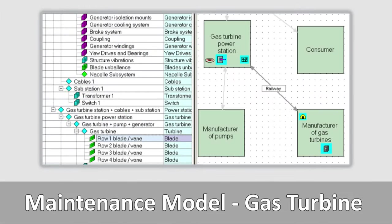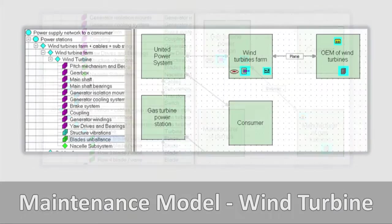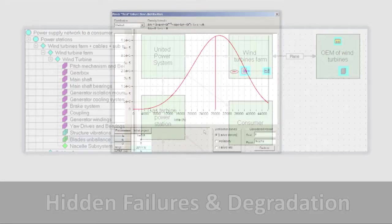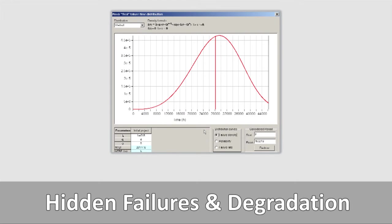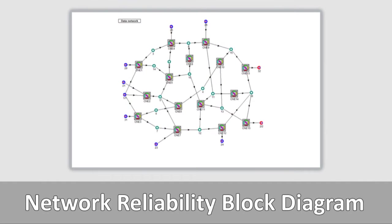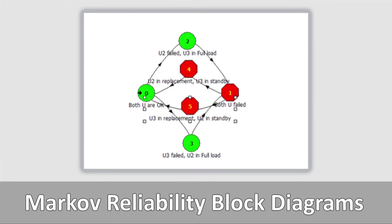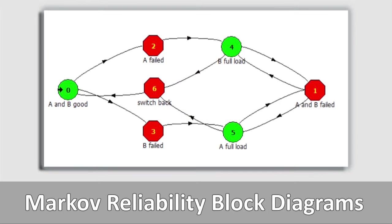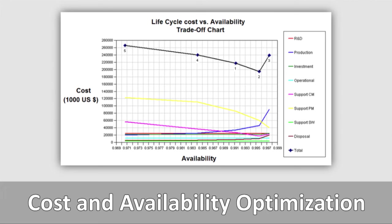comprising power supplying gas and wind turbines and a customer power distribution network. The system's complexity includes hidden failures and degradation. BQR's unique network and Markov models, encapsulated in the redundancy block diagram software, can model any complex power distribution infrastructure. BQR's optimization generates a dramatic cost reduction of 35% of life cycle costs and reduces 50% of the unavailability on average.